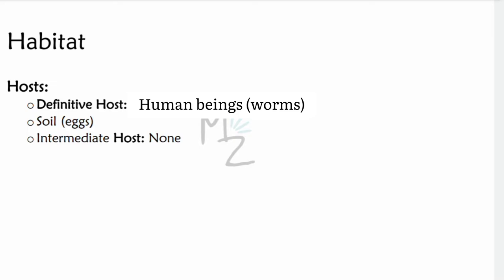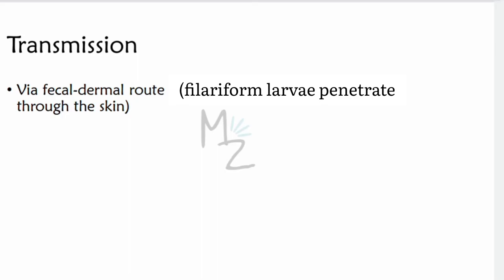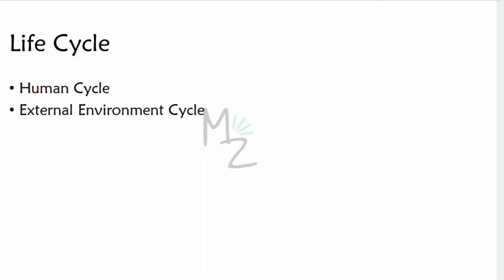Habitat: the definitive hosts are human beings. Eggs need to live in warm moist soil for some time in order to become embryonated. These worms have no intermediate host. Transmission occurs by a fecal-dermal route when the filariform larvae penetrate through the skin, usually the feet or the legs.